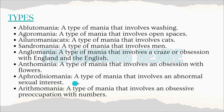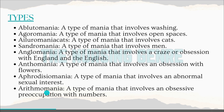Aphrodisiomania — a type of mania that involves an abnormal sexual interest or sexual thoughts. Arithmomania — a type of mania that involves an obsessive preoccupation with numbers.